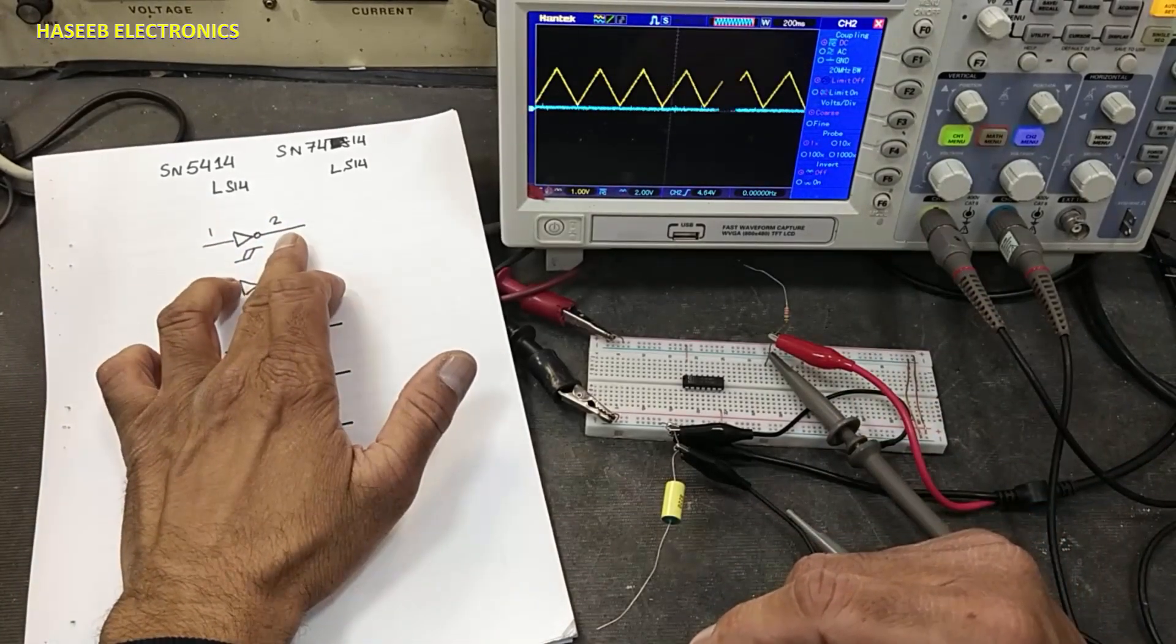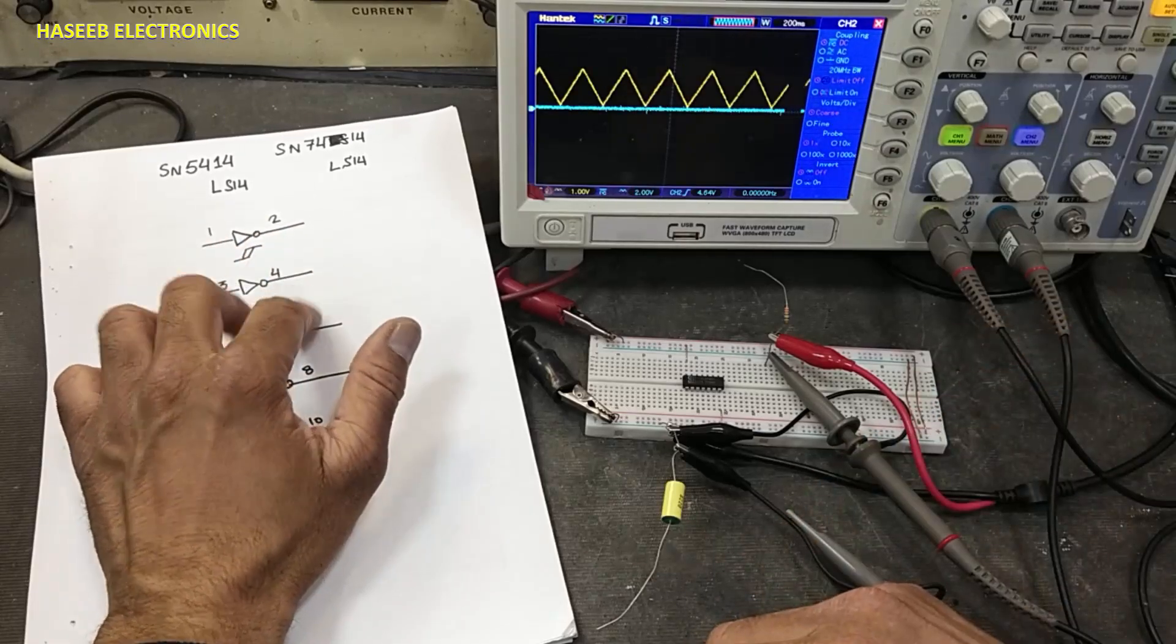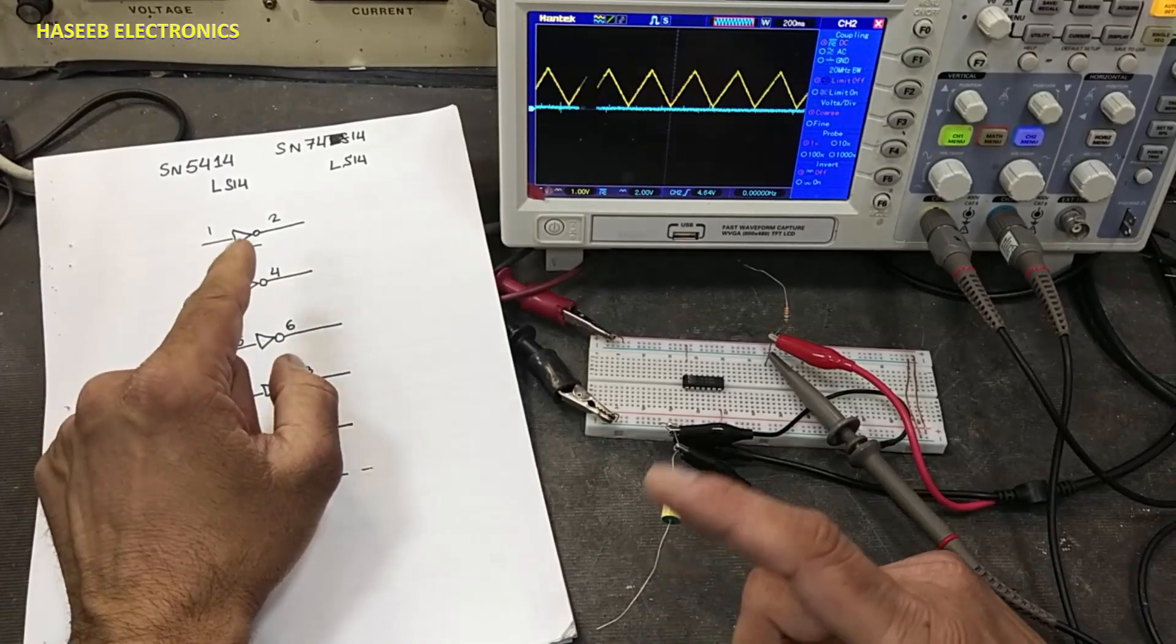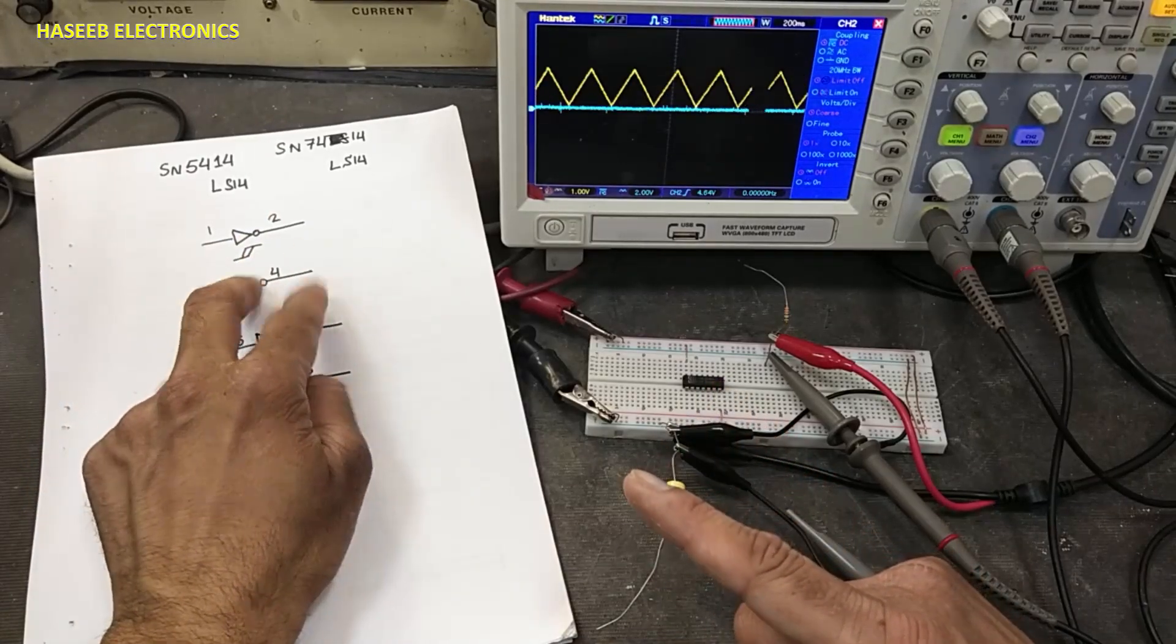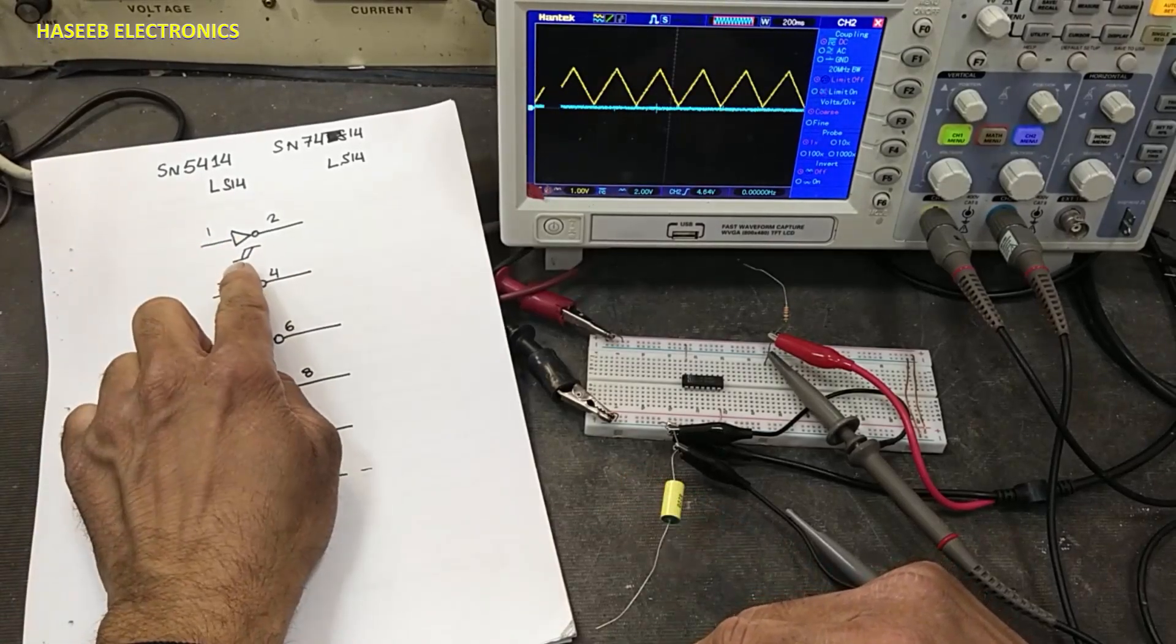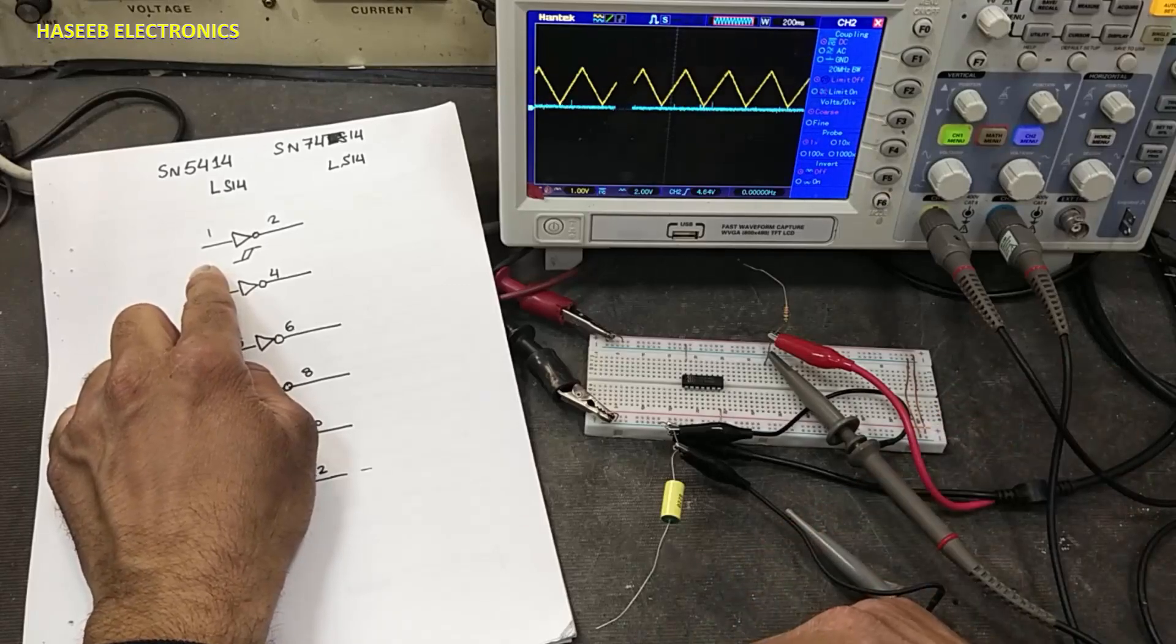Pin 1 is input, pin 2 is output. This is a hex inverter IC with six inverters, but these are different than simple TTL inverters because they have Schmidt trigger action. What is that?